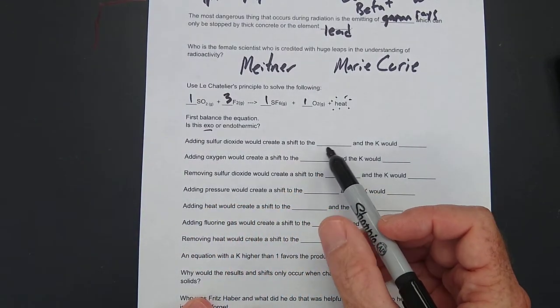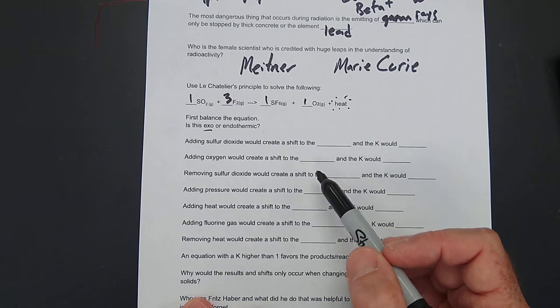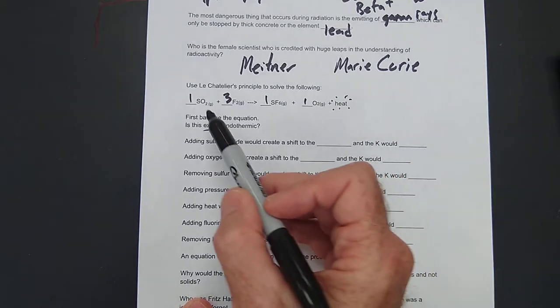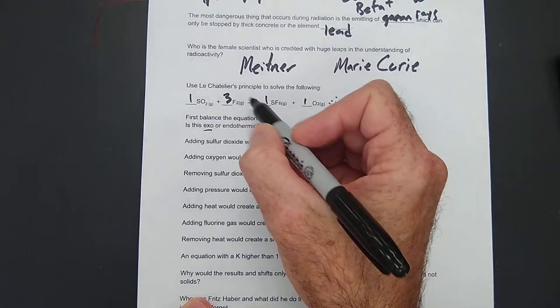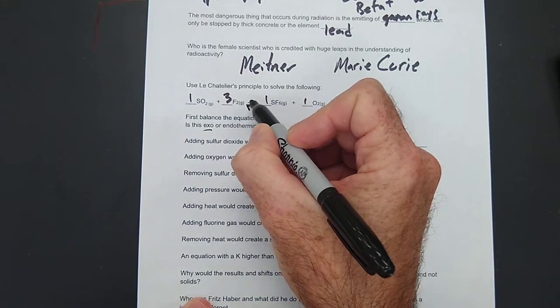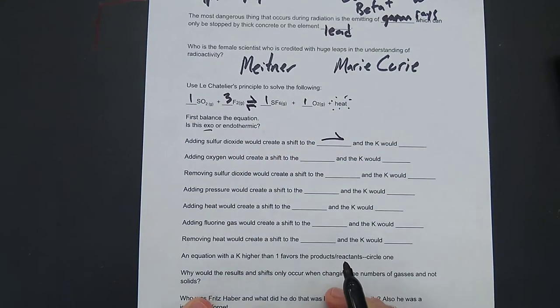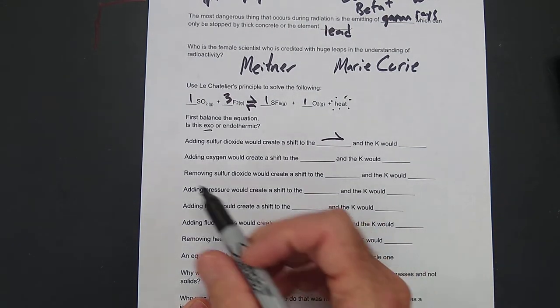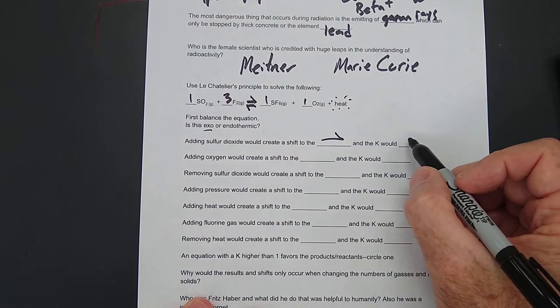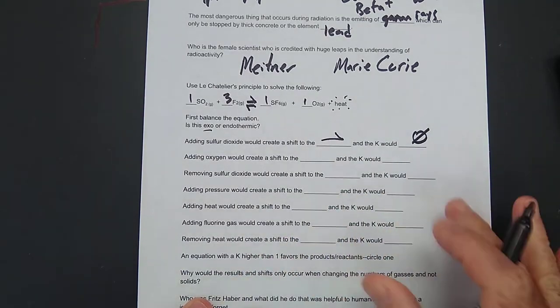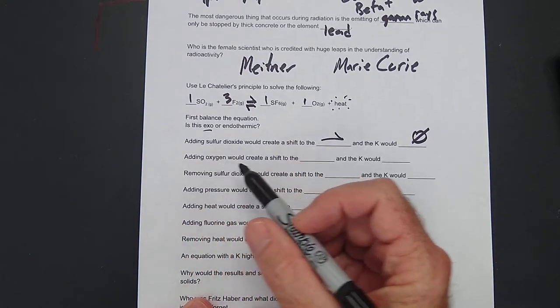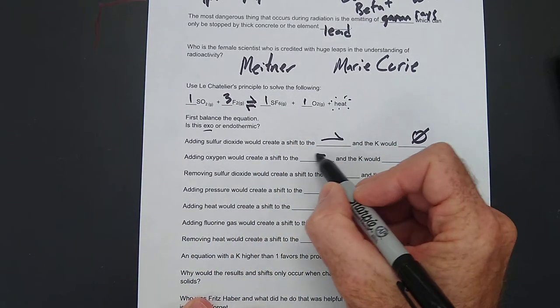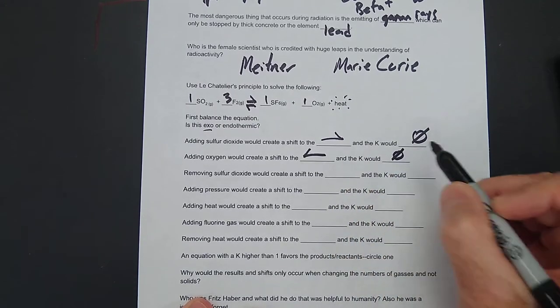Adding sulfur dioxide would create a shift to the blank, and the K would blank. We add some more of this. I have a shift to the right. Oh, I need to draw the arrow both ways here. Sorry, I couldn't do that with my computer program. And the K would not change. K would not change at all. All right.